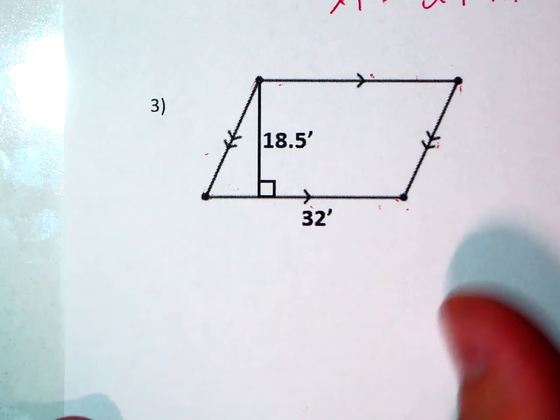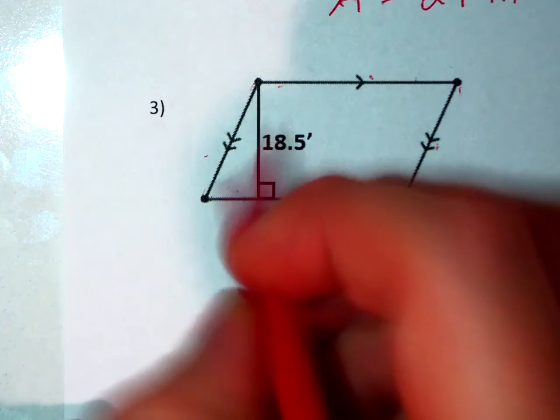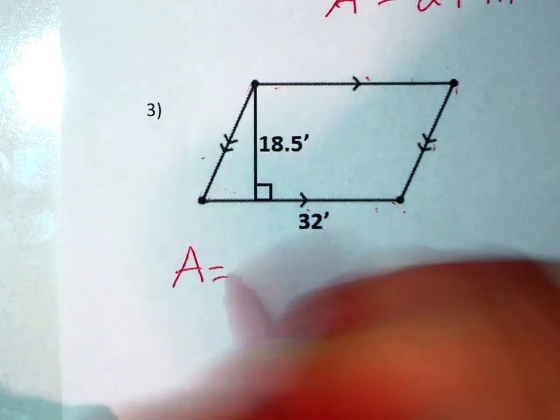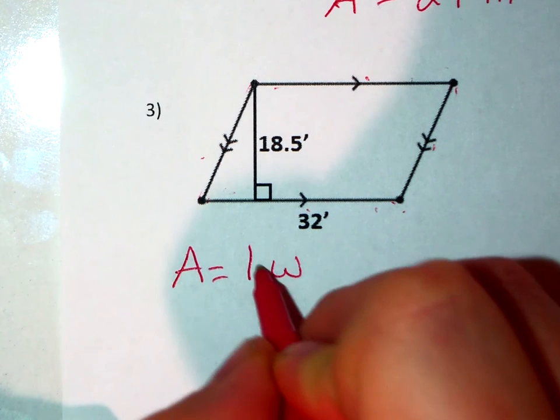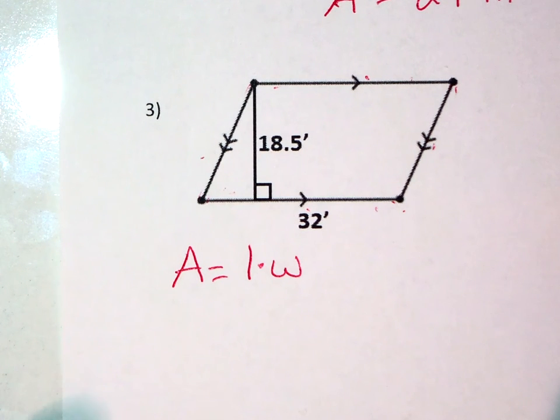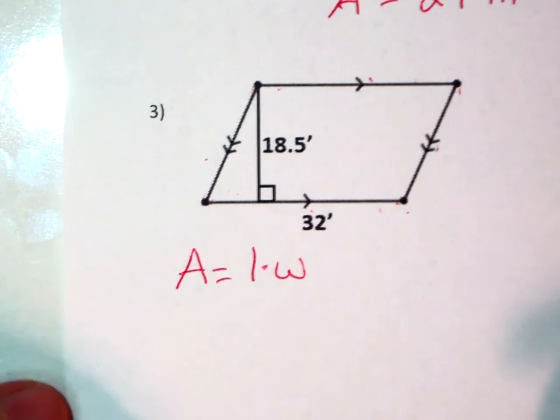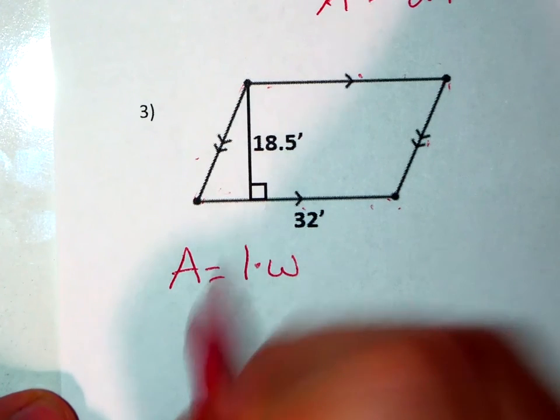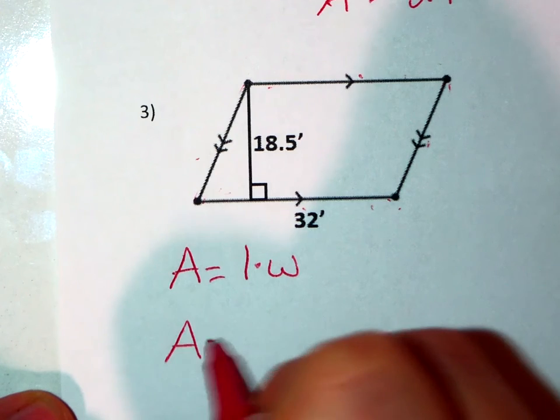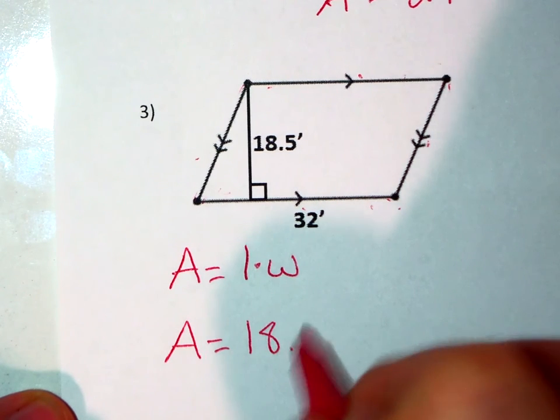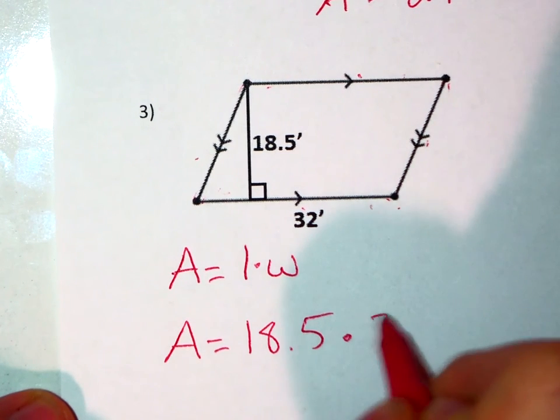Our formula for our parallelogram as we discussed in class is area equals length times width, just like as if it was a rectangle itself. So I plug those numbers into the equation. Area equals 18.5 times 32.